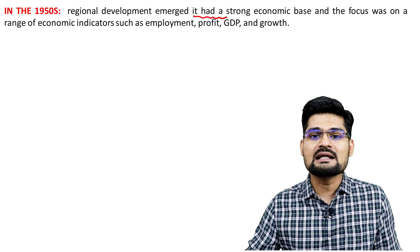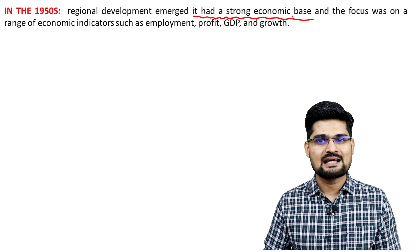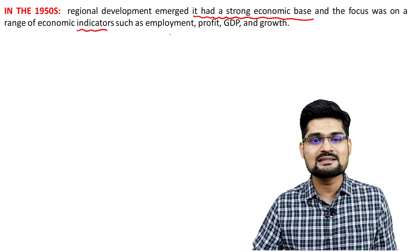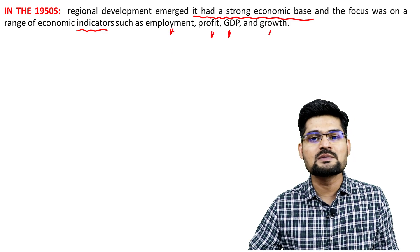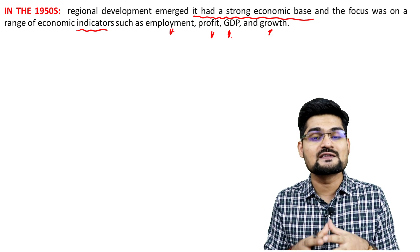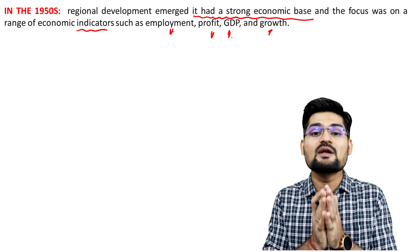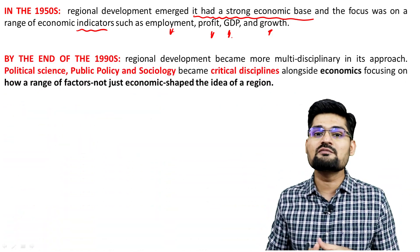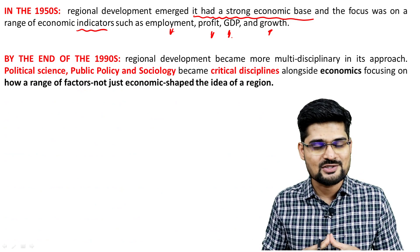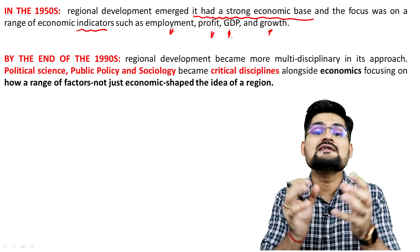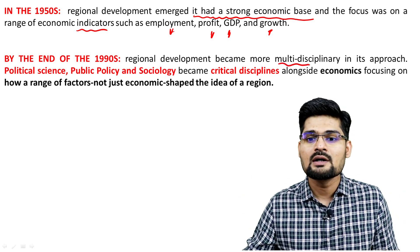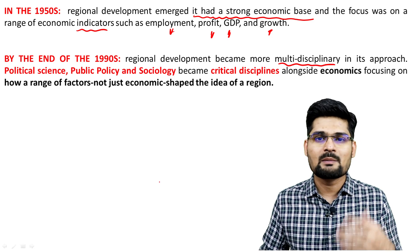Regional development emerged with a strong economic base, and the focus was mainly on economic indicators such as employment, profit, GDP, and growth. Gradually, the world branched into various disciplines talking about development. By the time we came to the 1990s and the end of the 20th century, it became multi-disciplinary in approach. Regional development became more multi-disciplinary in approach by the 1990s.